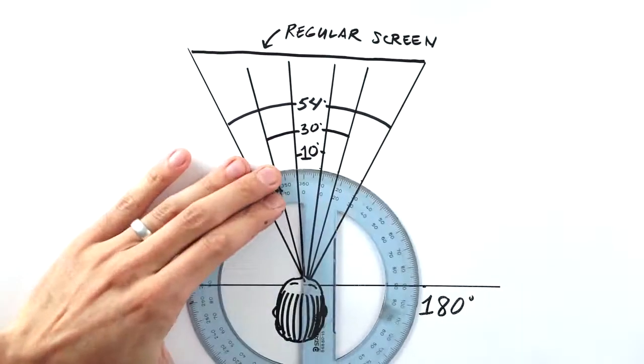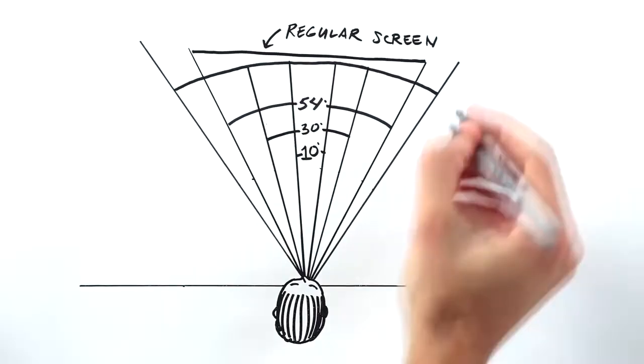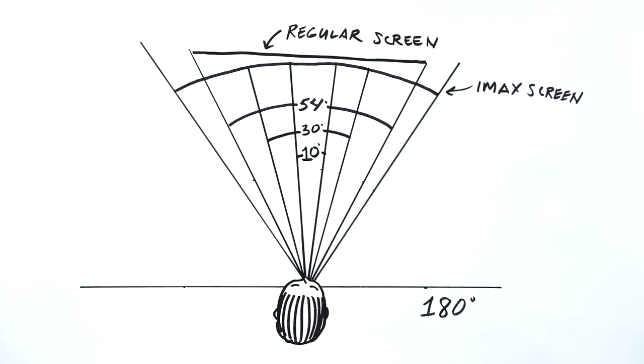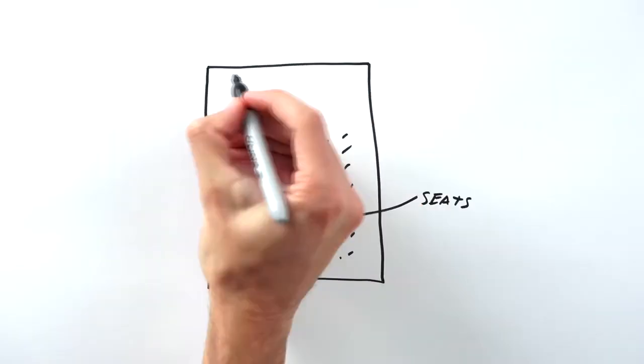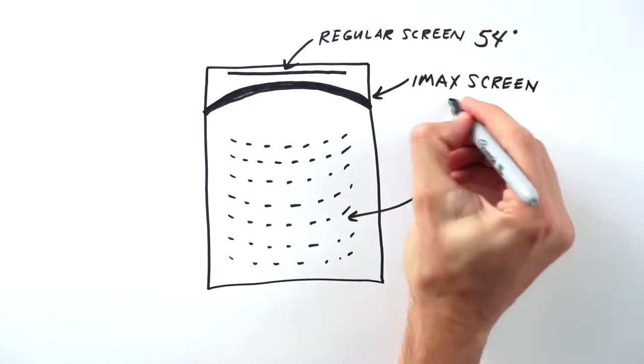In an IMAX theater, the screen is positioned closer to the audience, it's slightly curved, and spans from wall to wall and floor to ceiling. These are elements of IMAX's theater geometry, designed to increase the angles and open up the field of view to an average of 70 degrees.